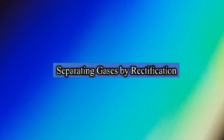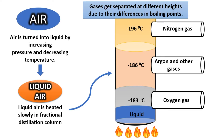Separating gases by rectification. The process for separating the components of air is called rectification. Air is turned into liquid first by applying pressure and lowering the temperature. The resulting liquid is then heated, and its components evaporate and turn into gas at different temperatures. For example, nitrogen turns into gas at a lower temperature and can be collected in another container while oxygen remains liquid.